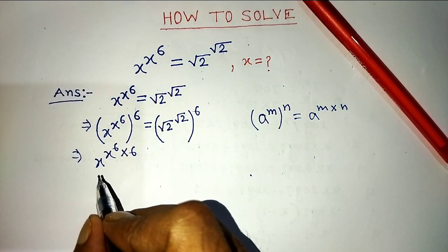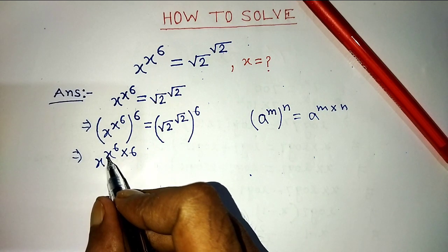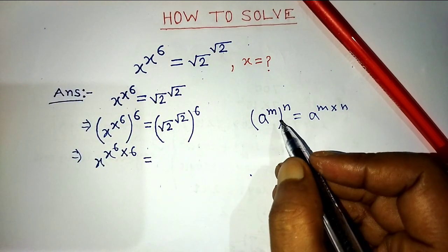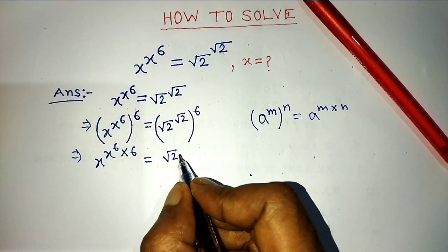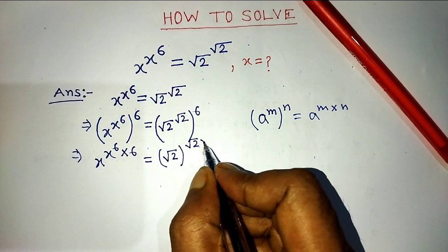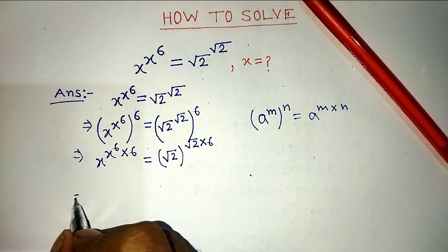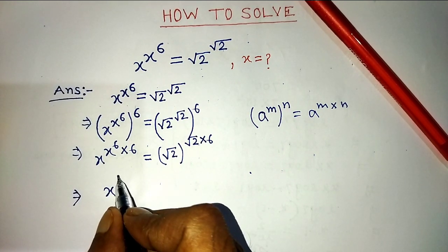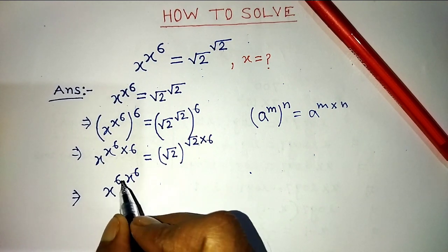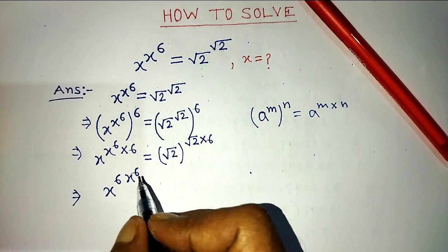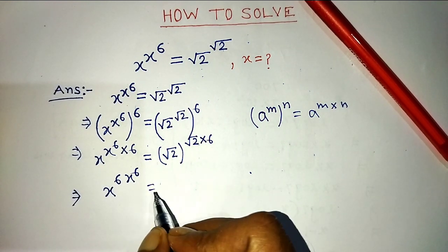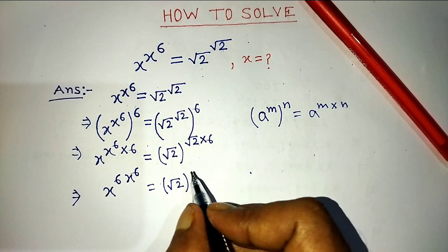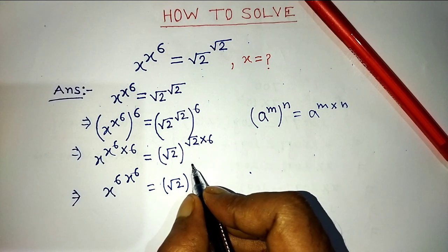So on the left hand side, we write x raised to the power x to the power 6 into 6, is equal to on the right hand side, root 2 whole to the power root 2 into 6. On the left hand side, x to the power 6 into 6 gives us 6 x to the power 6. On the right hand side, multiplying root 2 into 6 gives us 6 root 2.